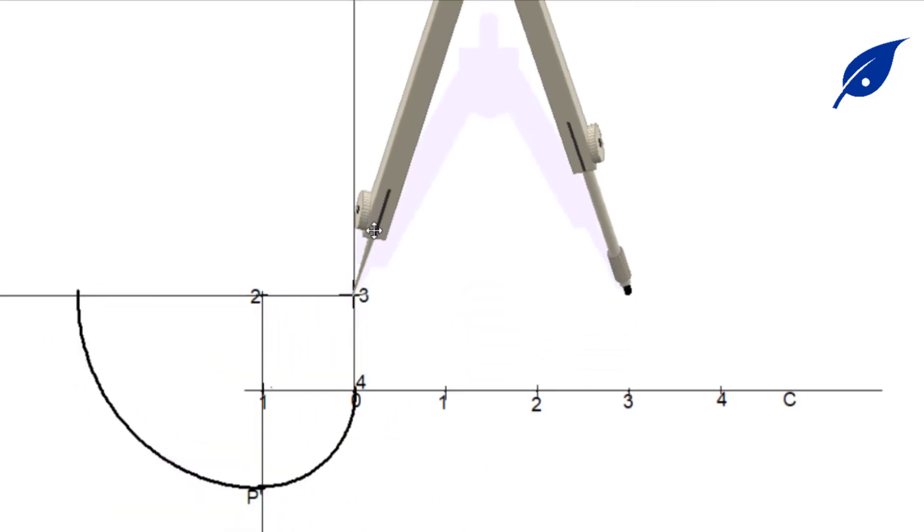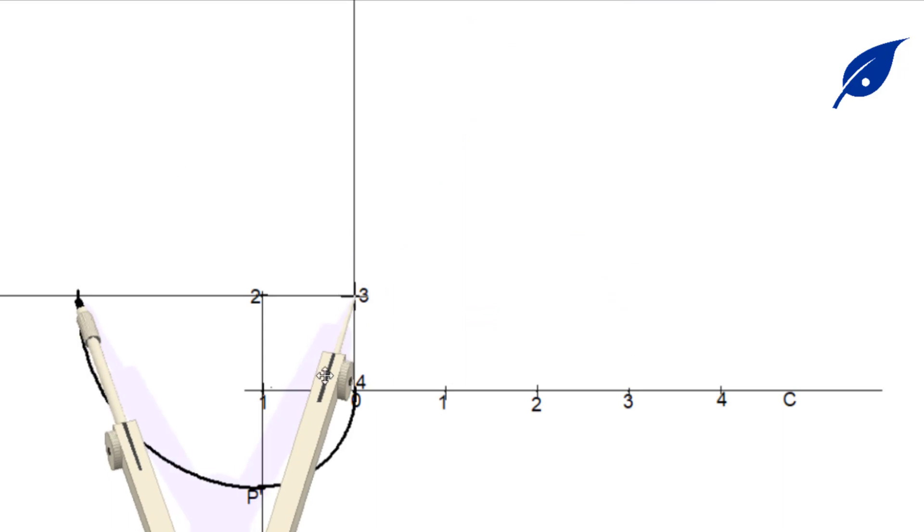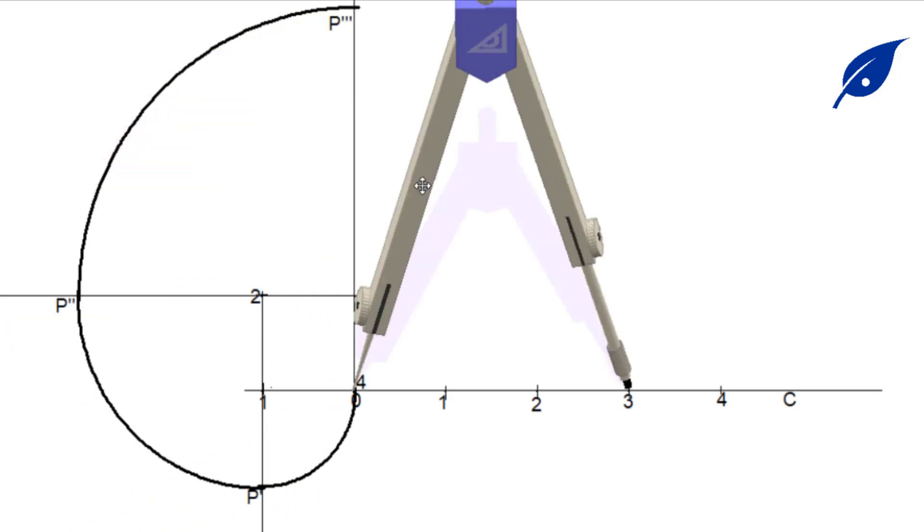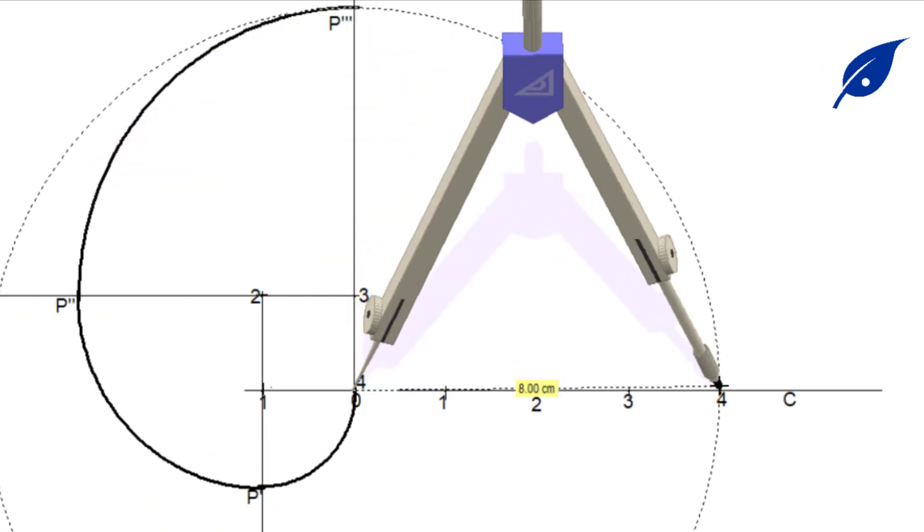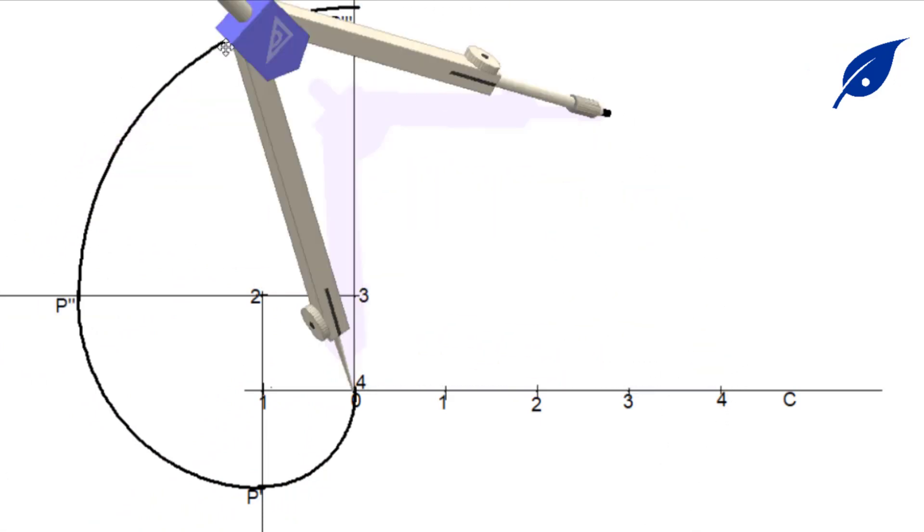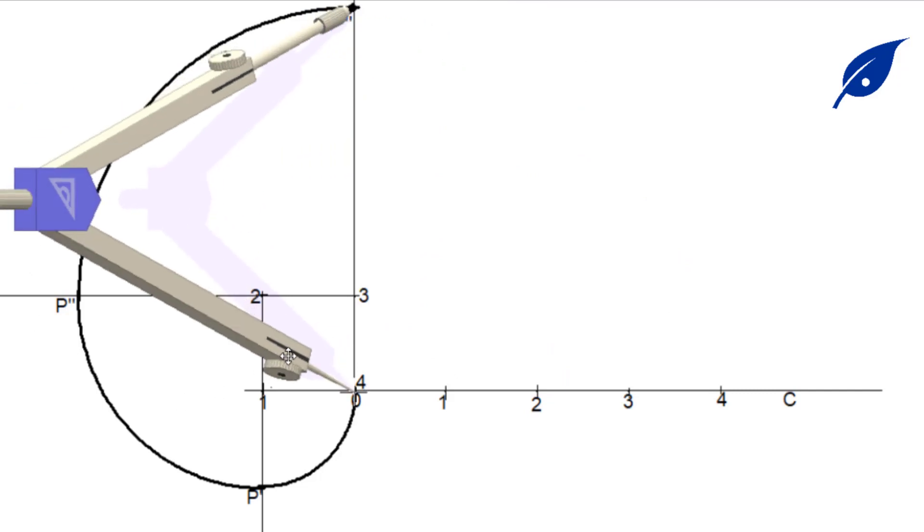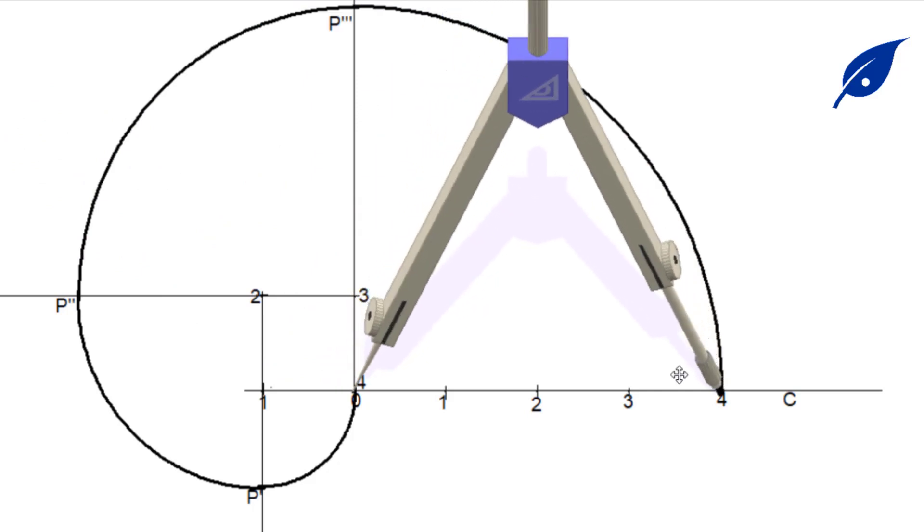Then the radius zero to three, we put the center at four, which is also the same thing as zero, then we describe the arc. This will give us the required involute of the square.